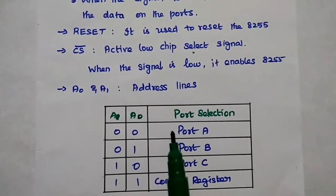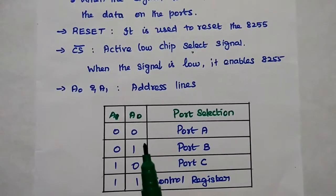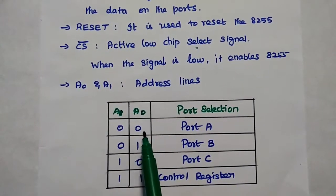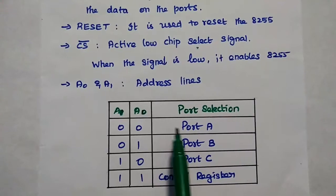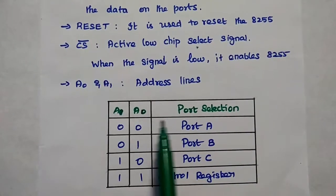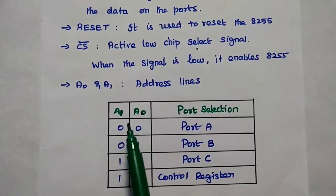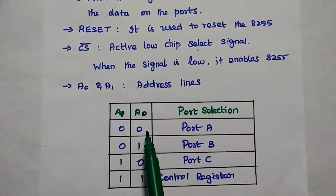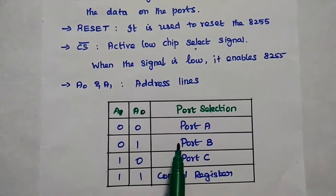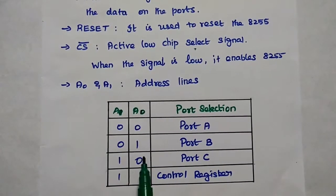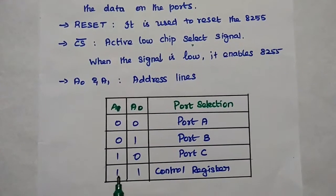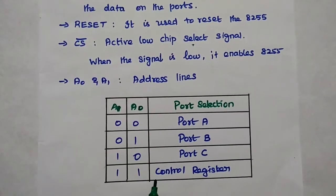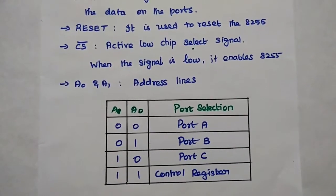A0 and A1 are the address lines from the processor. The combination of these two bits selects the input/output ports. A1=0, A0=0 selects Port A; A1=0, A0=1 selects Port B; A1=1, A0=0 selects Port C; and A1=1, A0=1 selects the Control Register.